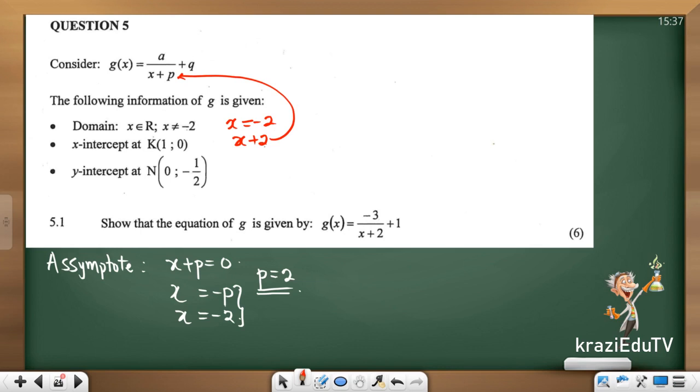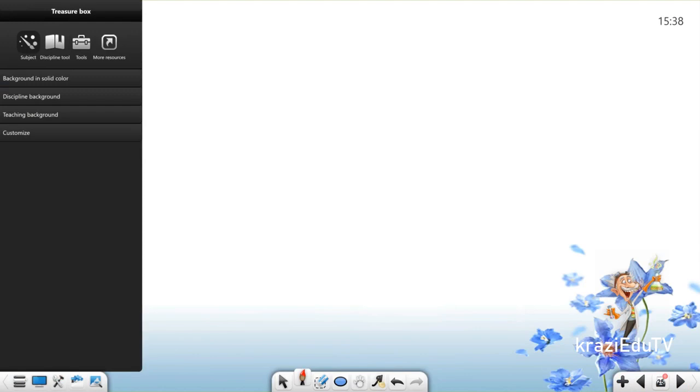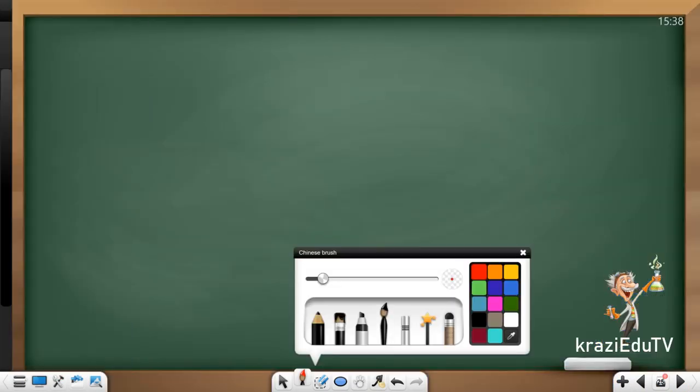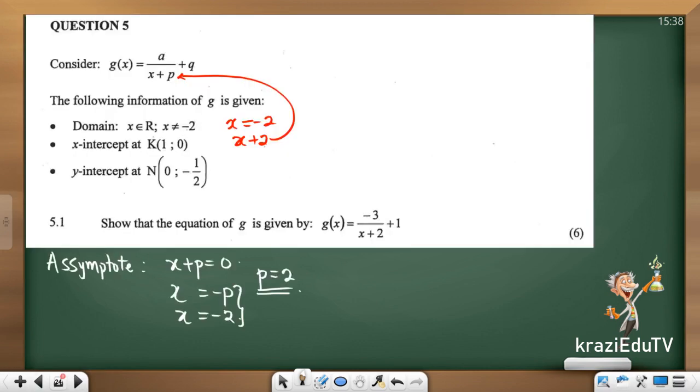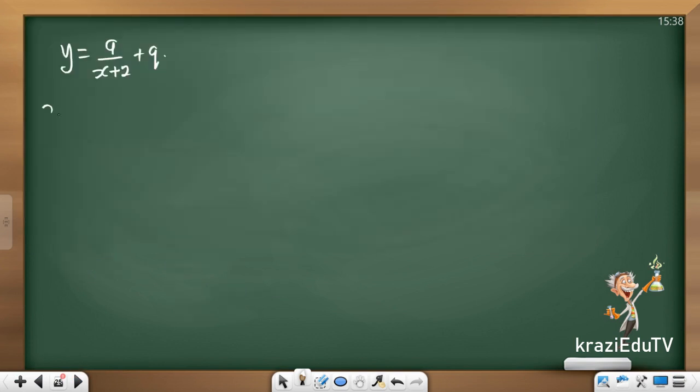Six marks. We want to show that g is given. So already we have our p as 2. Very interesting piece of question. Going to create a fresh page here. All right. So already we know our y, which is a over x plus 2 plus q. That's the first thing that we were able to determine. x intercept at k is 1 and 0.